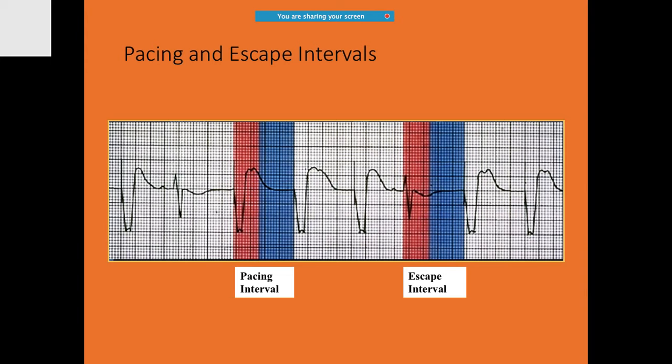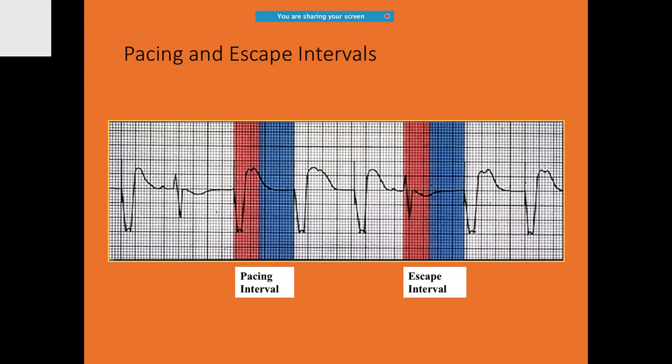The pacing interval is the time between two pacing spikes. The escape interval is the duration between an intrinsic beat and the next paced beat — after an inherent beat occurs, the pacemaker waits (sensing for any incoming beat) and if none comes, it paces. These are the two key concepts: pacing interval and escape interval.